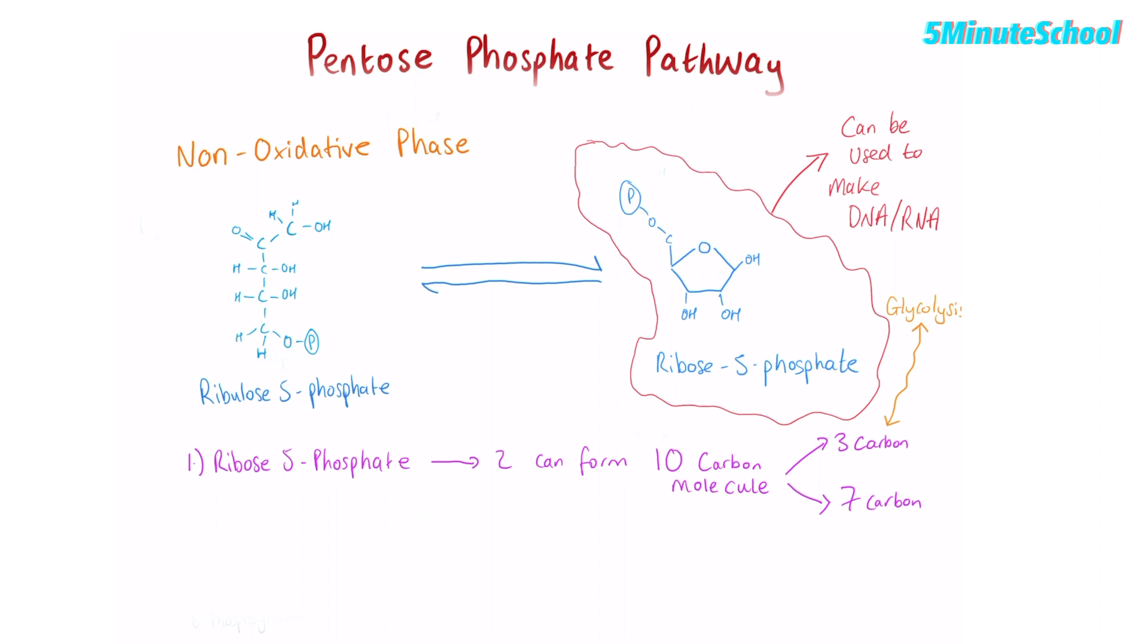So depending on what the cell needs, these molecules can be converted back and forth. This 3-carbon molecule can be used interchangeably. It can be shipped over from the glycolysis process to make the ribose 5-phosphate if there's a need. The 7-carbon and the 3-carbon molecule can also interconvert and make a 4-carbon and a 6-carbon molecule. This 4-carbon molecule can be used as a precursor to make amino acids. The 6-carbon molecule can be used in glycolysis.